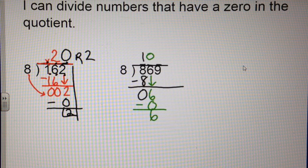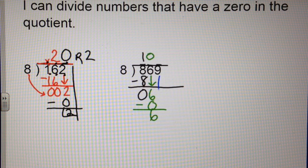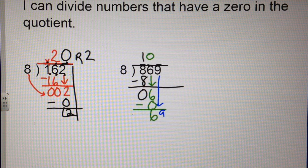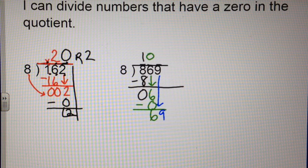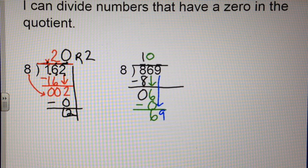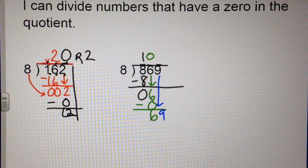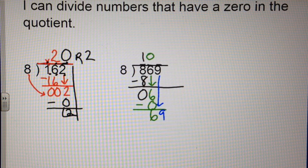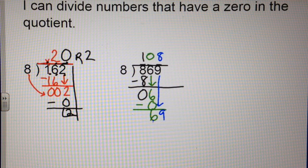The next thing I need to do is bring down my 9. 8 can go into 69. 8 goes in—well, I was going to guess 9. And 9 times 8 is 72. That's too much.